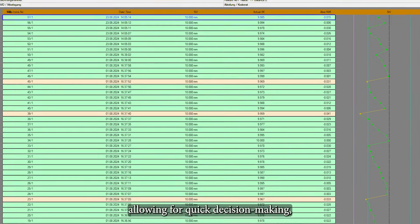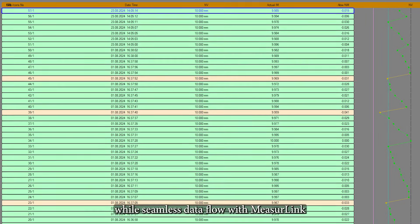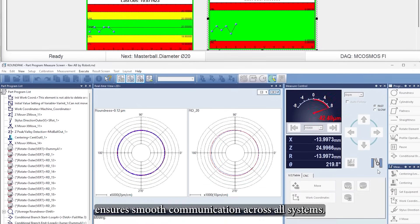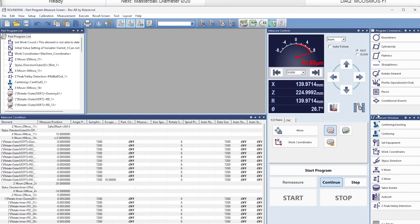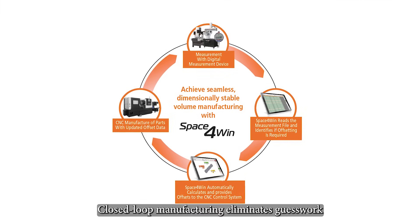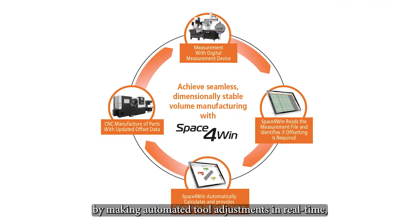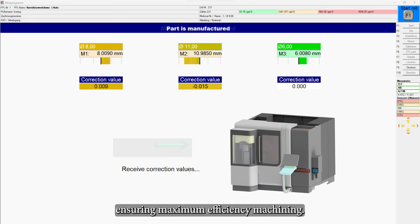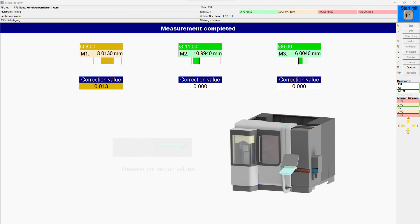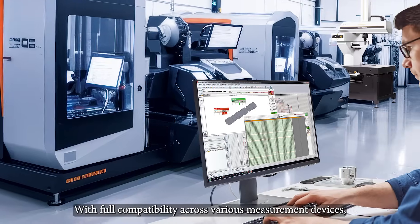Seamless data flow with MeasureLink ensures smooth communication across all systems. Closed-loop manufacturing eliminates guesswork by making automated tool adjustments in real-time, ensuring maximum efficiency with full compatibility across various measurement devices.